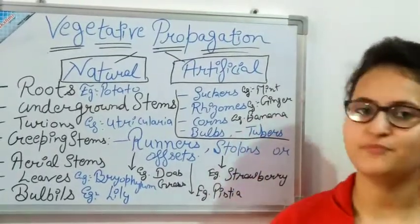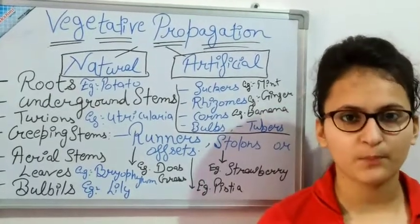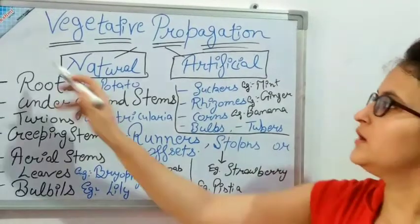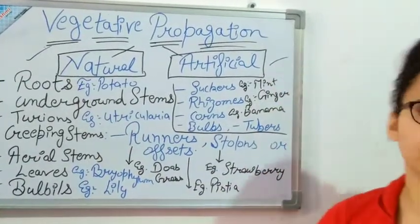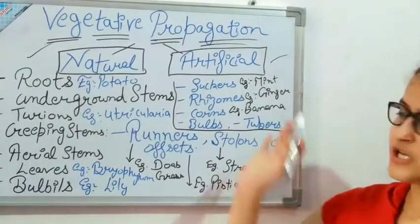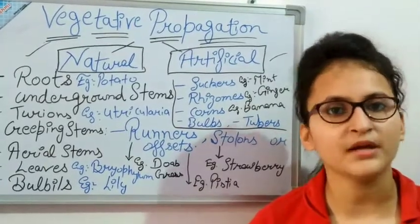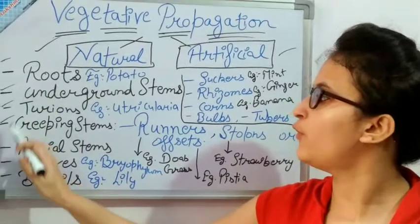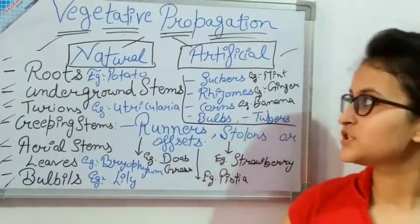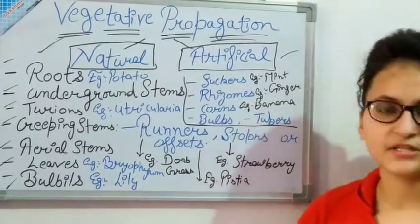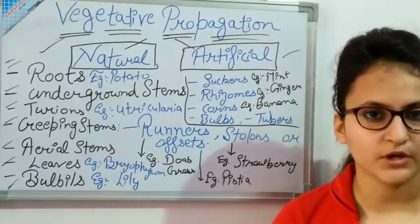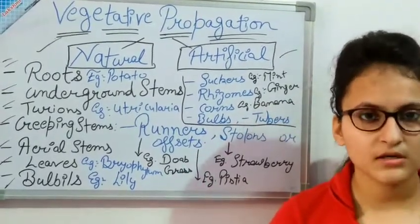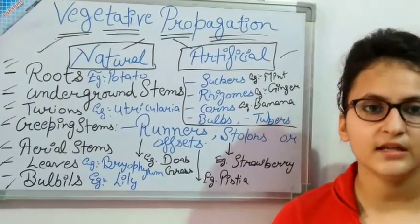Now we will do vegetative propagation — it has two types: natural and artificial. I will discuss natural vegetative propagation, which has 7 types: roots, underground stem, buds, bulbils, leaves — all of these are naturally occurring vegetative propagation.